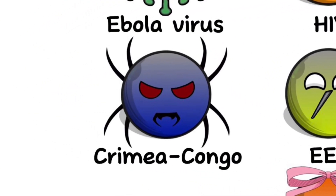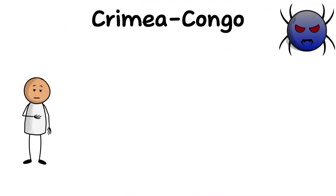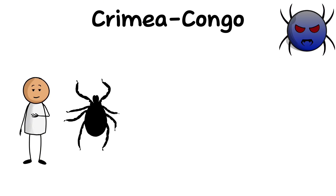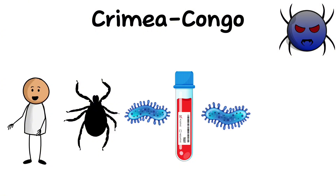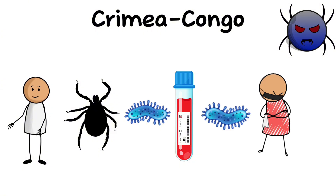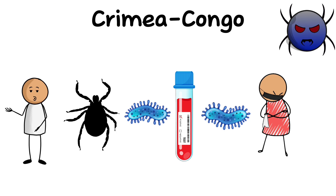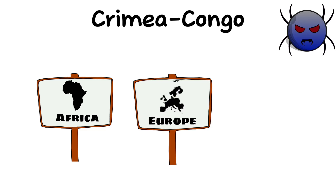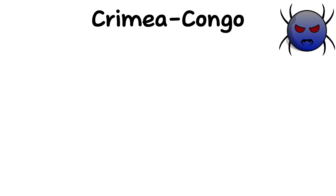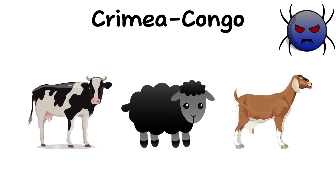Crimea-Congo. The Crimea-Congo virus, also known as the Crimean Hemorrhagic Fever virus, belongs to the Bunyaviridae family. It is transmitted to humans through tick bites, as well as contact with blood or tissues of infected animals or humans. The Crimea-Congo virus is found in various regions of the world, including countries in Africa, Europe, and Asia. The main reservoirs of the virus are animals such as cattle and sheep.